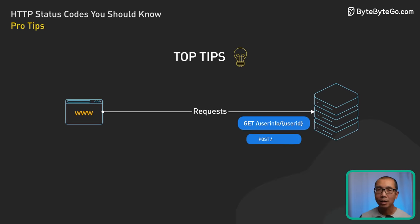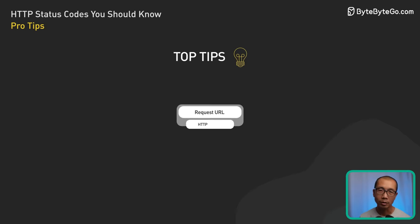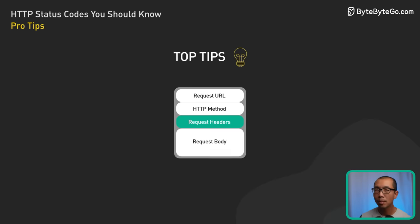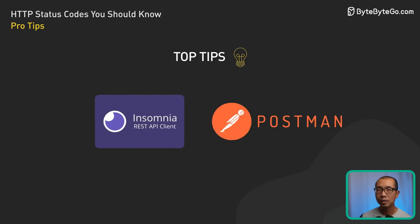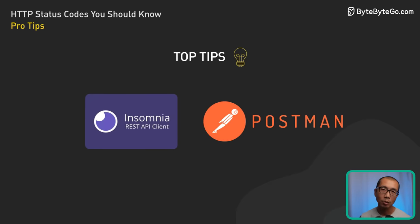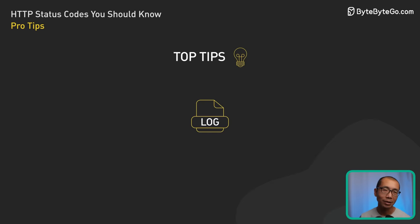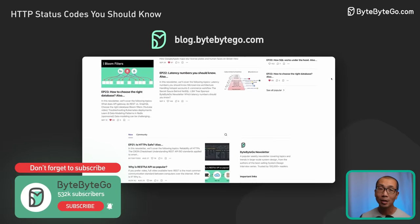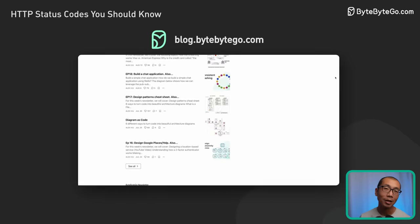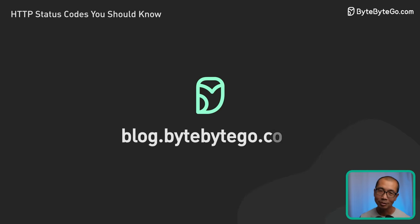Here are some pro tips. When tackling status code issues, always start with the basics: check the request headers and body, ensure the correct HTTP method is used, and confirm the endpoint URL. Tools like Postman or Insomnia can be invaluable in testing requests and inspecting responses. And don't forget to check the server logs if you have access to them.